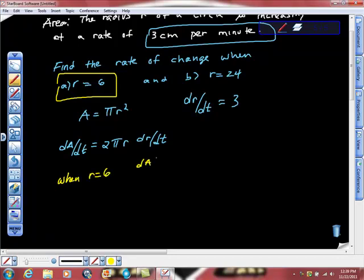So, when R is equal to 6, then the derivative of area with regard to time, the rate of change of area with regard to time is 2 times pi. R is 6, isn't it? And remember, we have this 3. So that's this 3 right here. And if you do this little bit of multiplication, I think we get 36. So we get 36 pi.